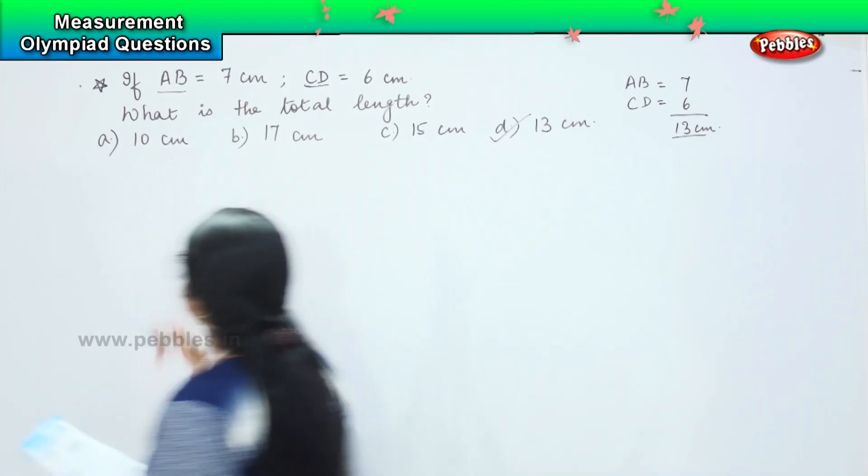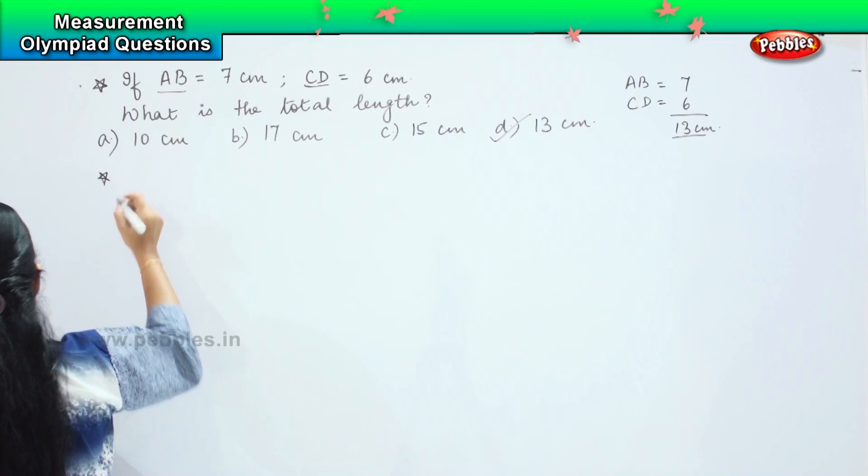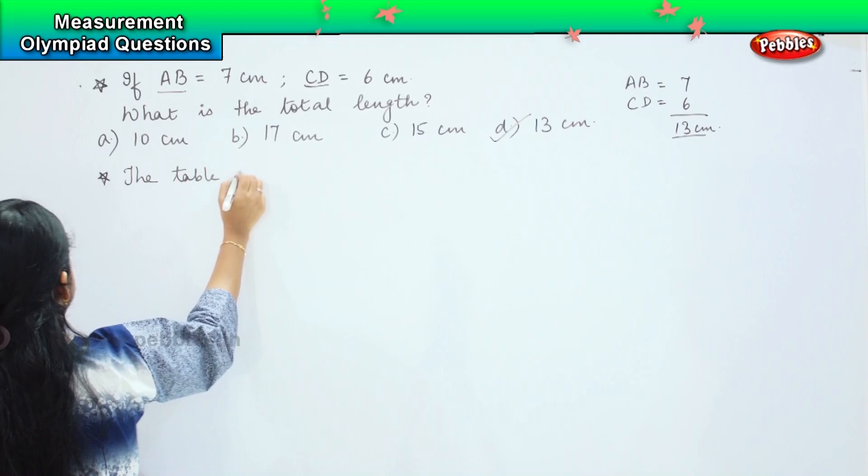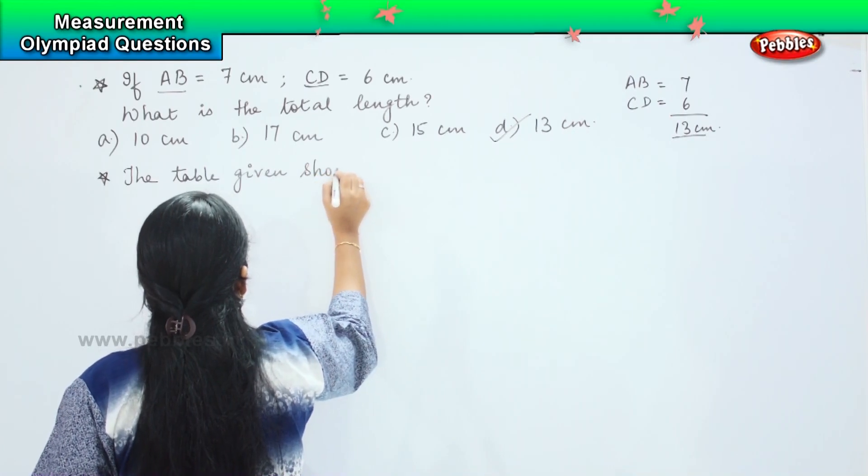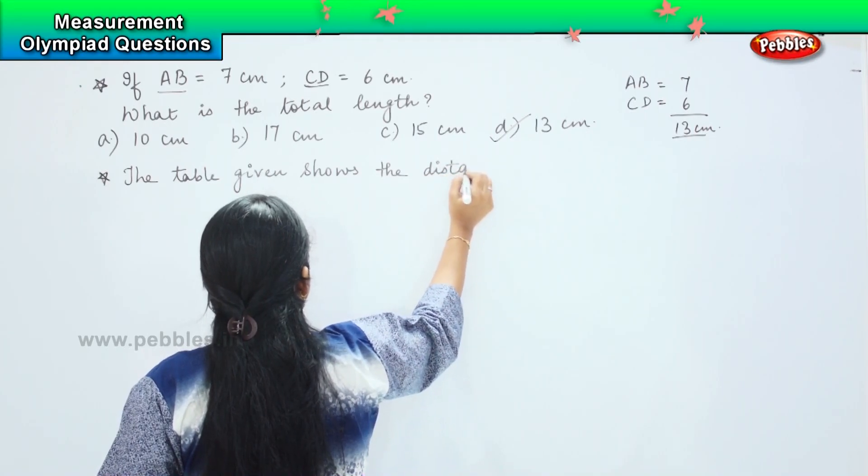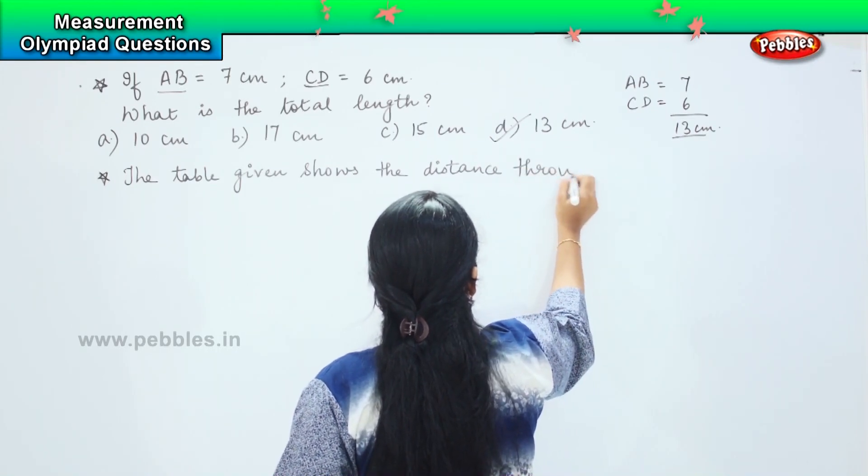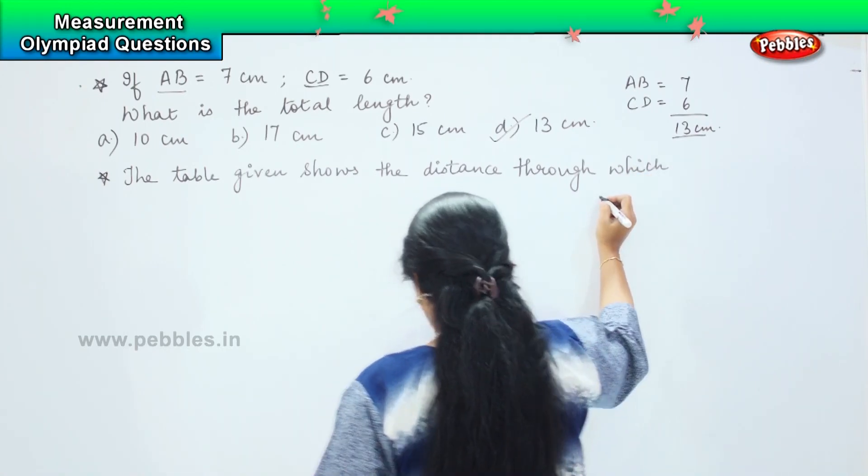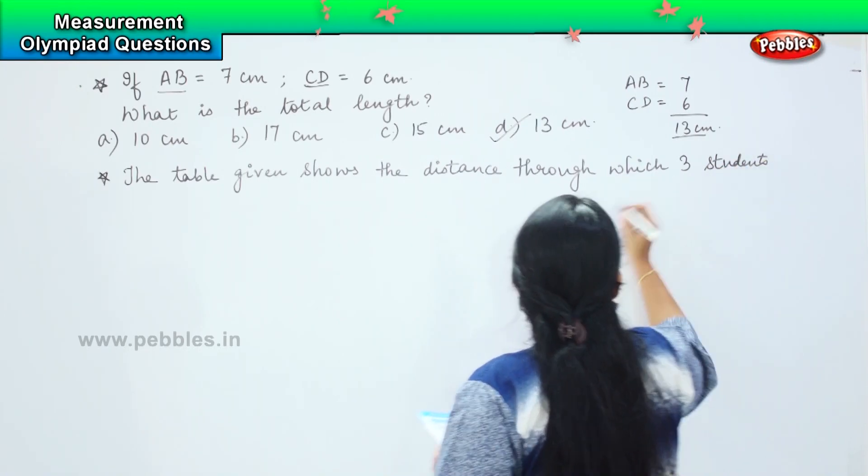The question says: the table given shows the distance through which three students jump.